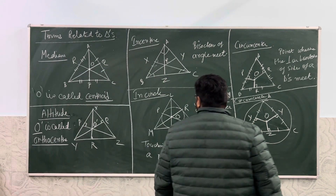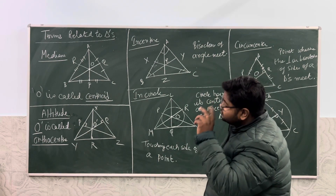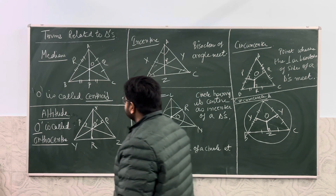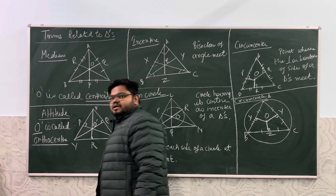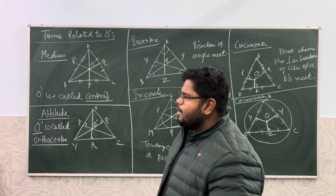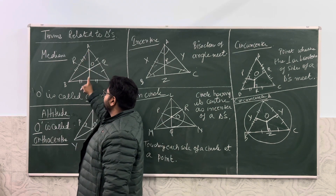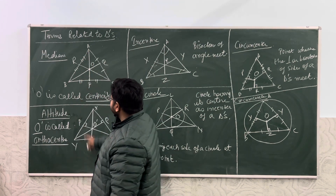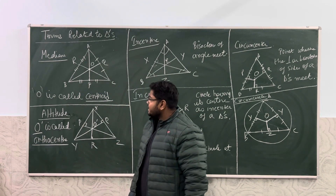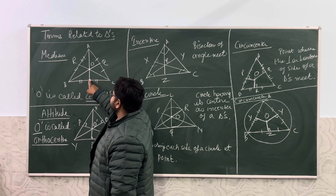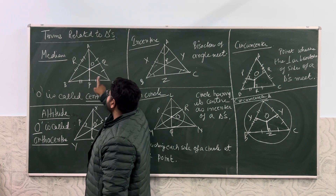This is Part 2 of the chapter on Triangles, covering some key terms related to triangles. The first term we are going to discuss is a median. A median is a line from the vertex of a triangle to the opposite side in such a way that the side is divided into 2 equal parts. That means this line AP is dividing BC into 2 equal parts: BP and PC.